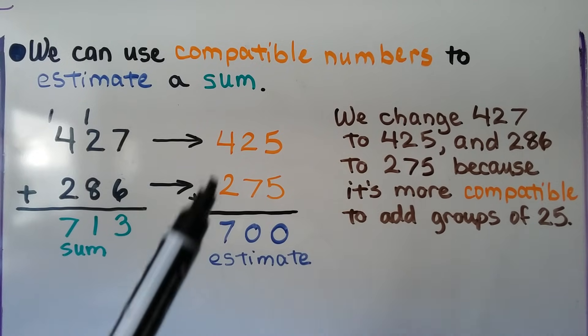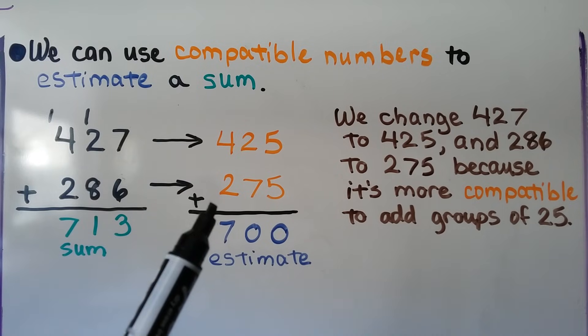So the actual sum is 713, but our estimate is 700, which is close to 713. We change the 427 to a 425, the 286 to a 275, because it's more compatible to add groups of 25.